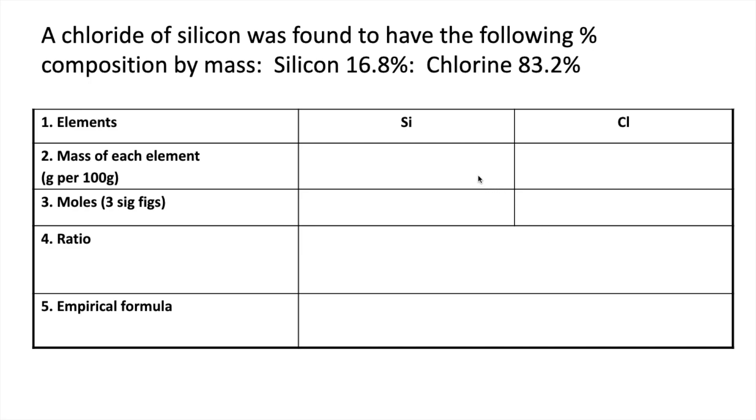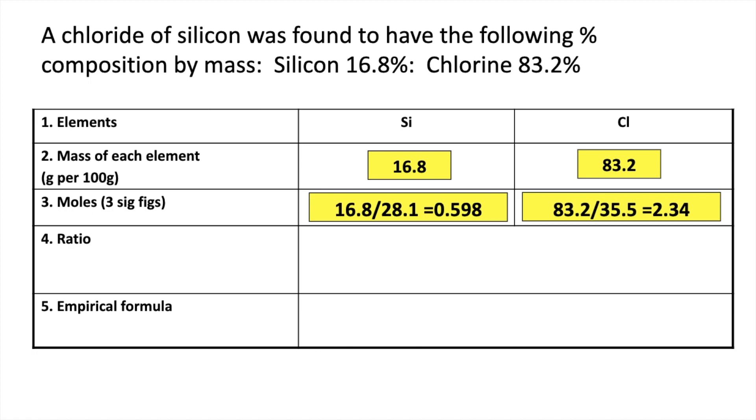For the second question I've gone for percentage data now. So it's the same method, we just put the percentages in this time. Calculate the moles by dividing by the relative atomic mass, so we get those numbers there.